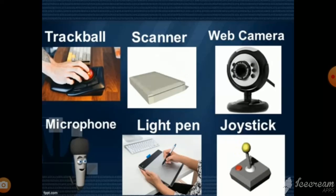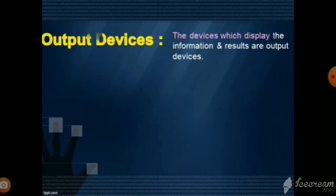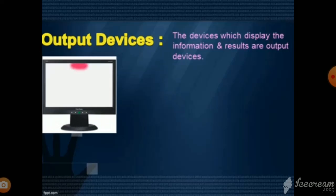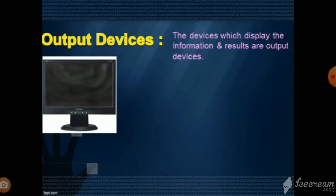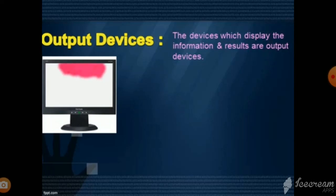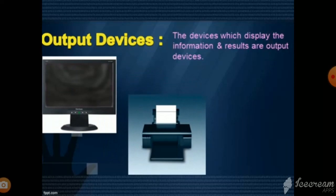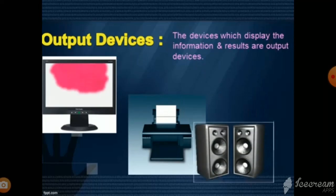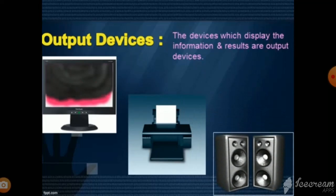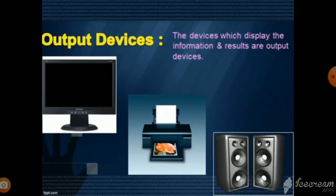Output devices. The devices which display the information and results are called output devices. Example: monitor and printer. Monitor. The monitor looks like a television screen. Whatever you type on the keyboard can be seen on the monitor. It also displays the processed information. Printer. It prints the output that you see on the computer screen on paper. Speaker. Speakers are used to hear music and sound stored in the computer.